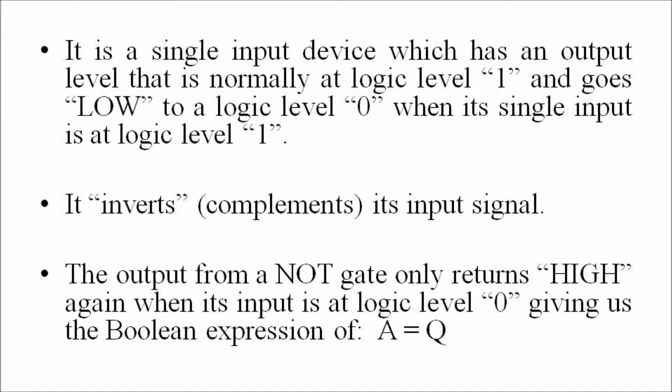In other words, it inverts or complements its input signal. The output from a NOT gate only returns high when its input is at logic level 0, giving us the Boolean expression A̅ = Q.